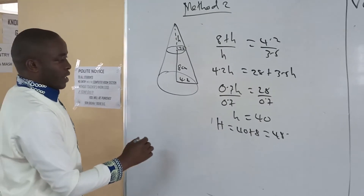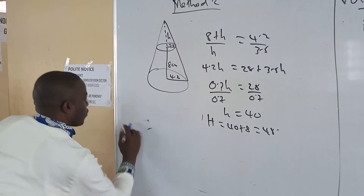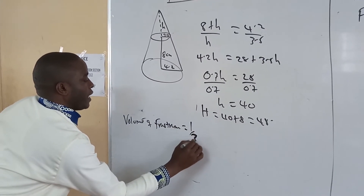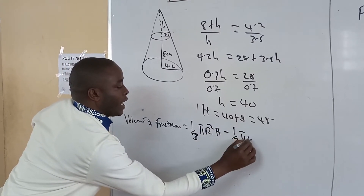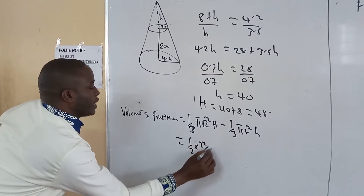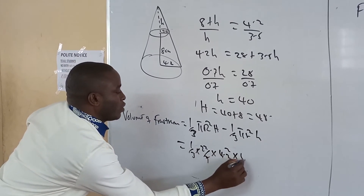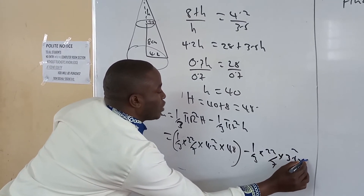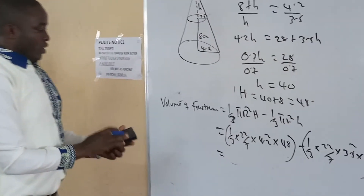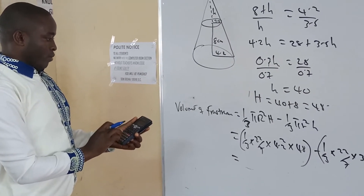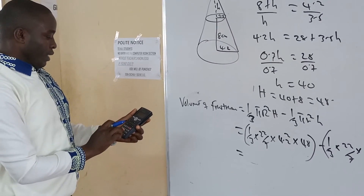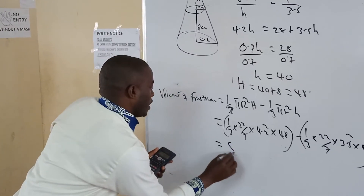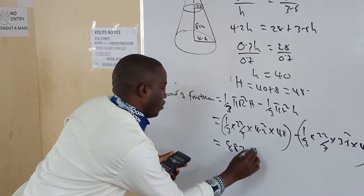We know the volume of a cone is one-third π r² h. So the volume of the frustum equals the volume of the large cone minus the volume of the small cone. That is: one-third times 22/7 times 4.2 squared times 48, minus one-third times 22/7 times 3.5 squared times 40. The first term gives us 887.04.